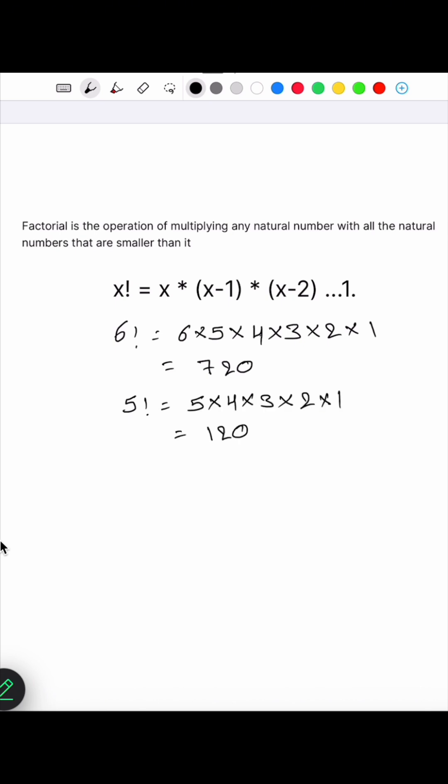Now to show how 0 factorial is equal to 1, I want to change the formula a little bit. x plus 1 factorial is equal to x plus 1 multiplied by x multiplied by x minus 1 until 1.